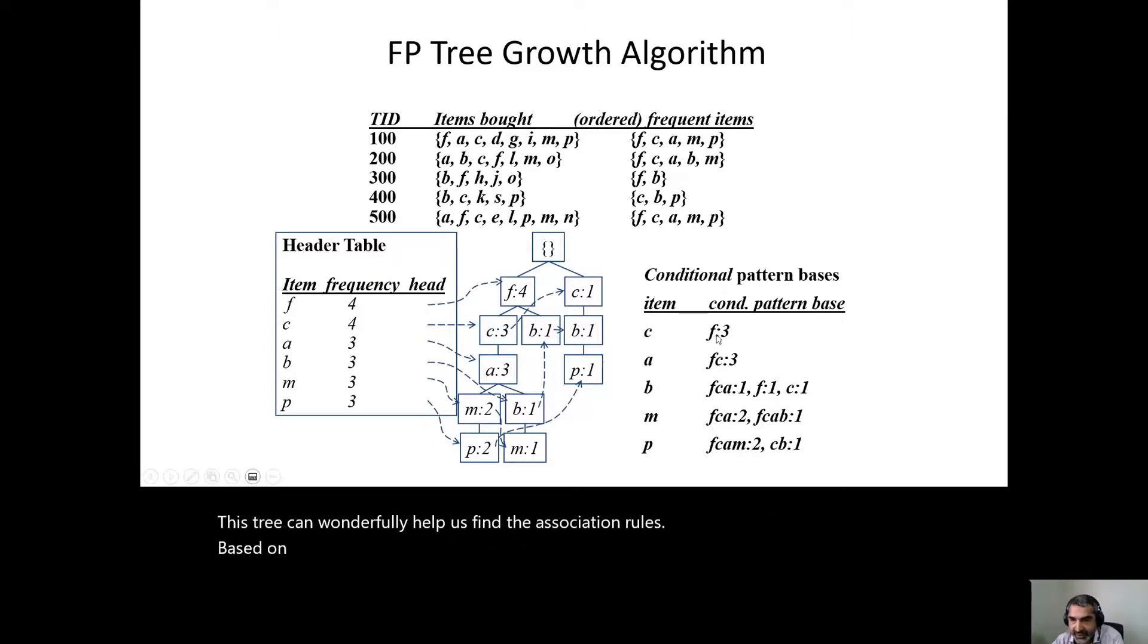Based on this tree, we will create a conditional pattern base. A conditional pattern base is unique items in one column and the pattern base in the other column. So look at this. If we see C, for this C item, we want to find the pattern base. We will check the node that C is a child of, and F three times, as many as the count of C, are coming together with F. For A, we will look at A, and F, C three times is the conditional pattern base. For B, one B is here, so F, C, A one time is the conditional pattern base for B.